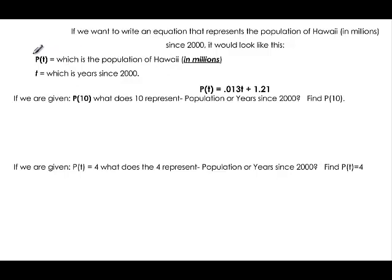We would start with P(t). We have to name the function, and since we're talking about population, I'm going to call it P(t), because we're talking about time since 2000. So P(t) is the population of Hawaii in millions, and t represents the years since 2000. Here's the function: P(t) = 0.013t + 1.21.